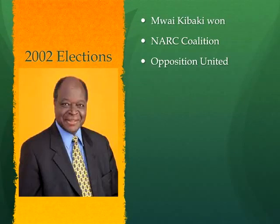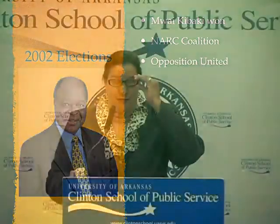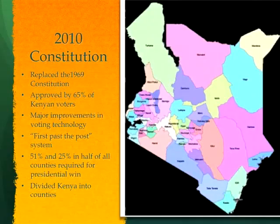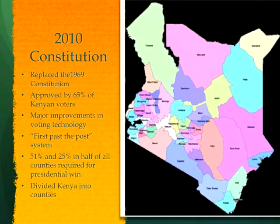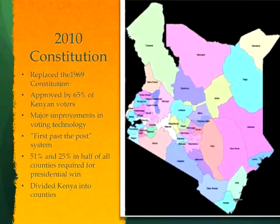The 2002 elections were a real watershed for Kenyan democracy. Mwai Kibaki — who had actually served under the Moi regime, as did Raila Odinga — was finally able to unify the opposition, creating a coalition of all the fractured parties called the National Rainbow Coalition. He defeated Uhuru Kenyatta, who was Moi's preferred successor. This was a period of great civil society organization, a peaceful election, and people were really excited.